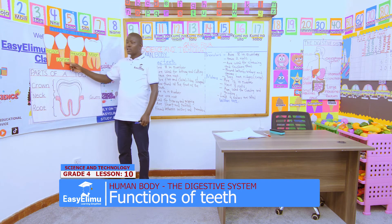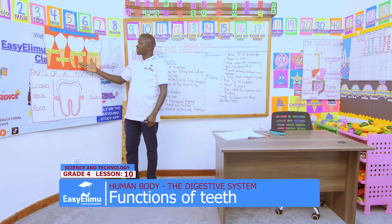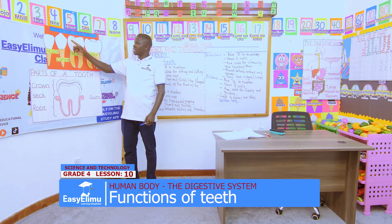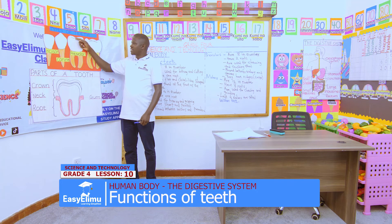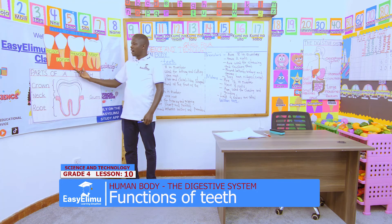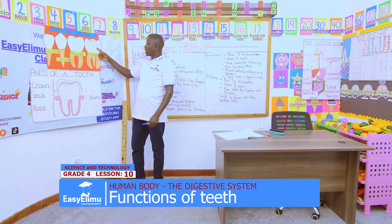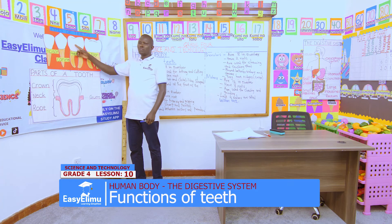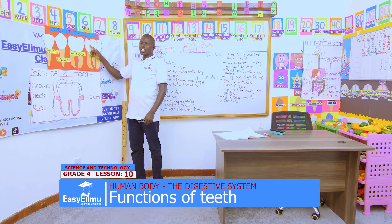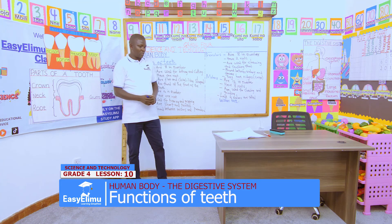Canines have one root too. The premolars — the difference between premolars and the first two types, canines and incisors, is their shape at the top: they have ridges called cusps, and they have two roots. The molars also have cusps and they have three roots. Their work is crushing and grinding. That is the work of the four types of teeth.